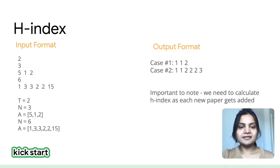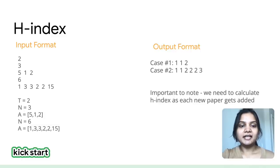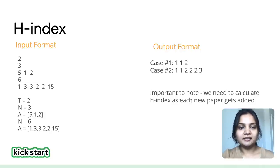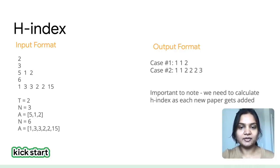The first line indicates the number of test cases, which is 2, so T equals 2. The next two lines are the input for the first test case: N equals 3, which is the number of papers published by the author, and then the list of citations received, which is 5, 1, 2. For the output format, for each test case, output one line containing 'Case #X: Y', where X is the test case number starting from 1, and Y is the space-separated list of integers. Please take note of the space and capitalization of the words.